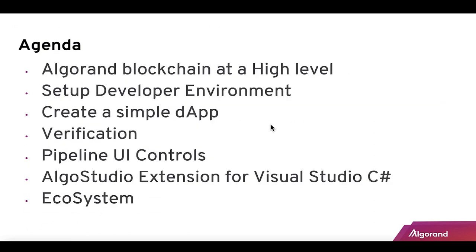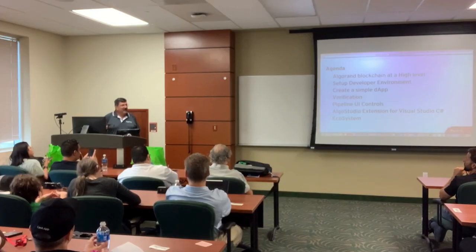The agenda for the next hour: we'll talk about Algorand at a high level and blockchain at a high level, set up our development environment, create a simple dApp before your very eyes, and talk about verification — especially with smart contracts. We have a great ecosystem, and one tool is Pipeline UI, which has controls that work with JavaScript and React for building front ends. Also, brand new — first time ever seen live — a new AlgoStudio extension for Visual Studio using C#, with a file-new template ready to go for smart contracts.